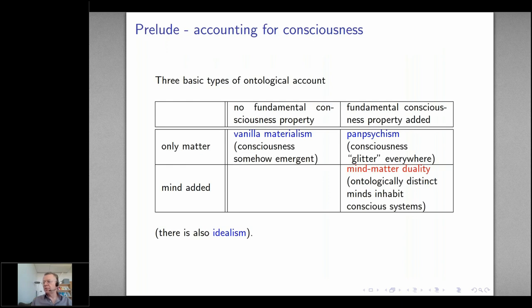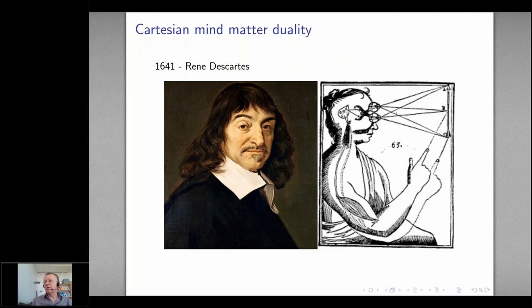The third type of account is mind-matter duality. Here you have matter — described, for example, by the standard model — and in addition, mind is added as a separate property. This idea goes back to René Descartes in 1641. Here's a picture of René Descartes and an illustration representing this. The mind is acting on the brain — I think this is the pineal gland — and also the brain is acting on the mind.